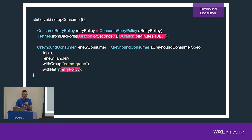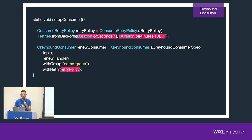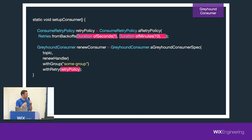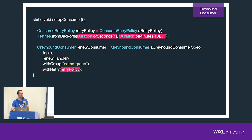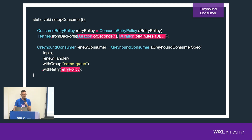To set this up, we introduce a retry policy and configure the intervals between retries — for example, one second, then if it still fails, ten minutes. You can add more intervals, and if after a long time it still doesn't process, you can put it in a dead letter topic, review it manually, and decide whether to reintroduce it or not.